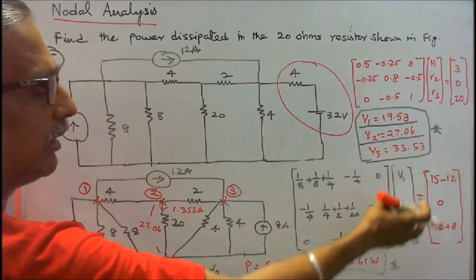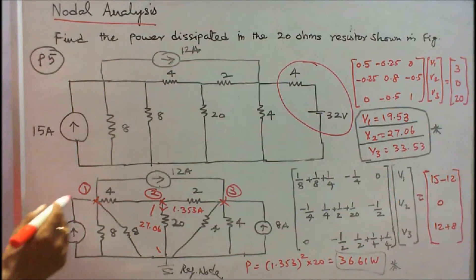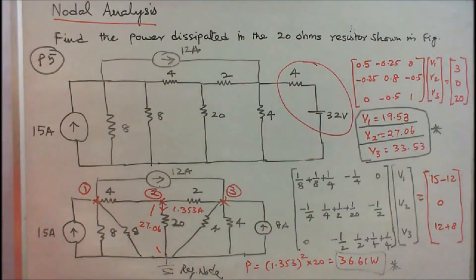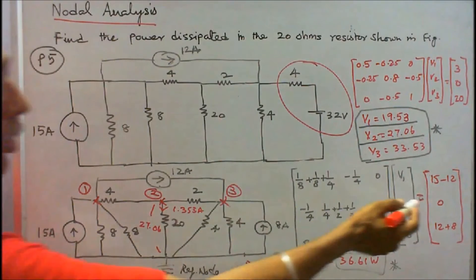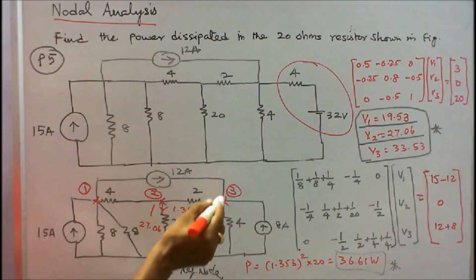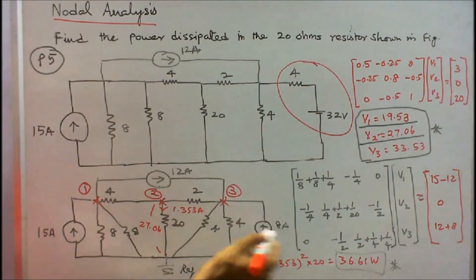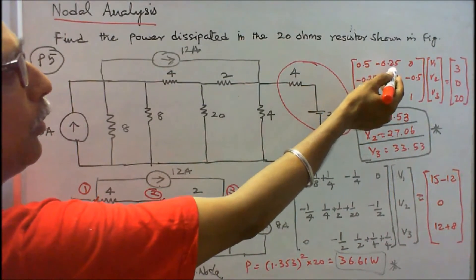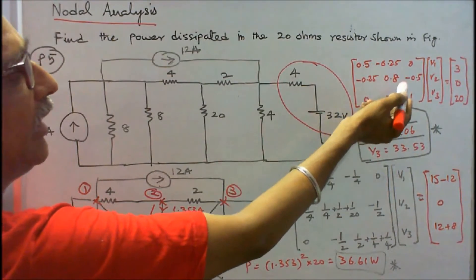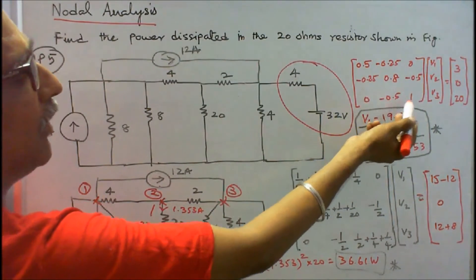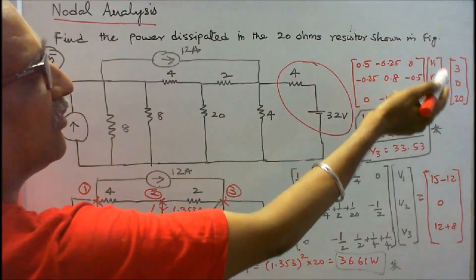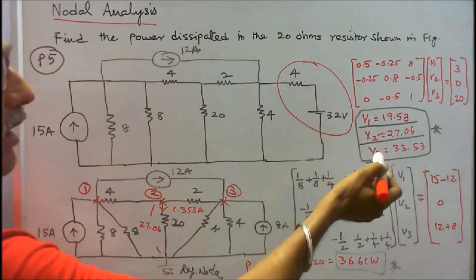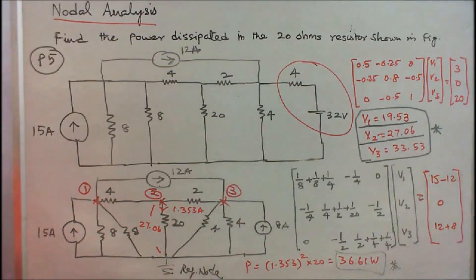The matrix equation is: [0.5, minus 0.25, 0; minus 0.25, 0.8, minus 0.5; 0, minus 0.5, 1] times [V1; V2; V3] equals [3; 0; 20]. At node 1: 15 minus 12 equals 3 amps; node 2: 0 amps; node 3: 12 plus 8 equals 20 amps. Solving gives V1 equal to 19.53 V, V2 equal to 27.06 V, and V3 equal to 33.53 V.